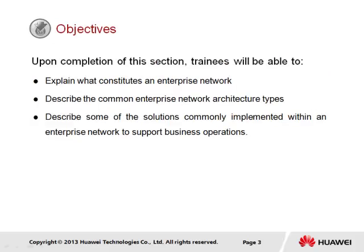Upon completion of this section, it is expected that trainees will be able to explain what constitutes an enterprise network, describe the common enterprise network architecture types, as well as describe some of the solutions commonly implemented within an enterprise network to support business operations.